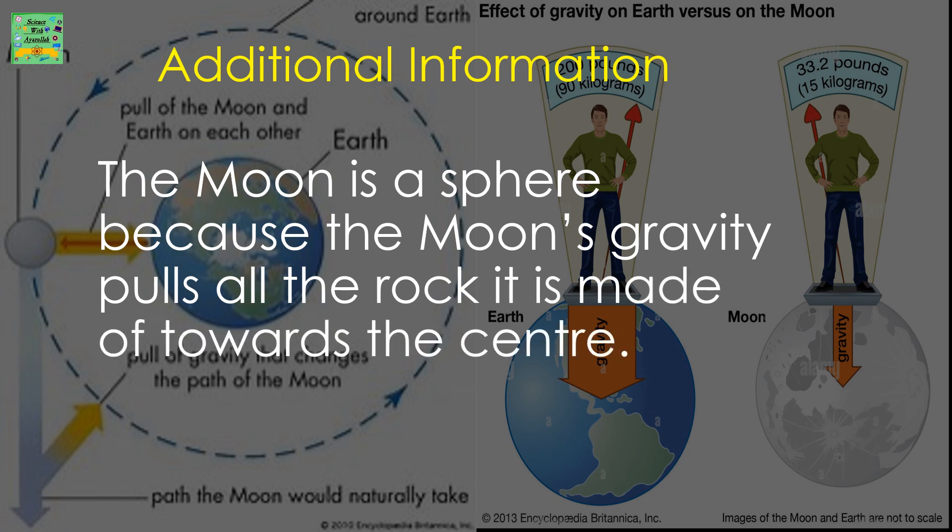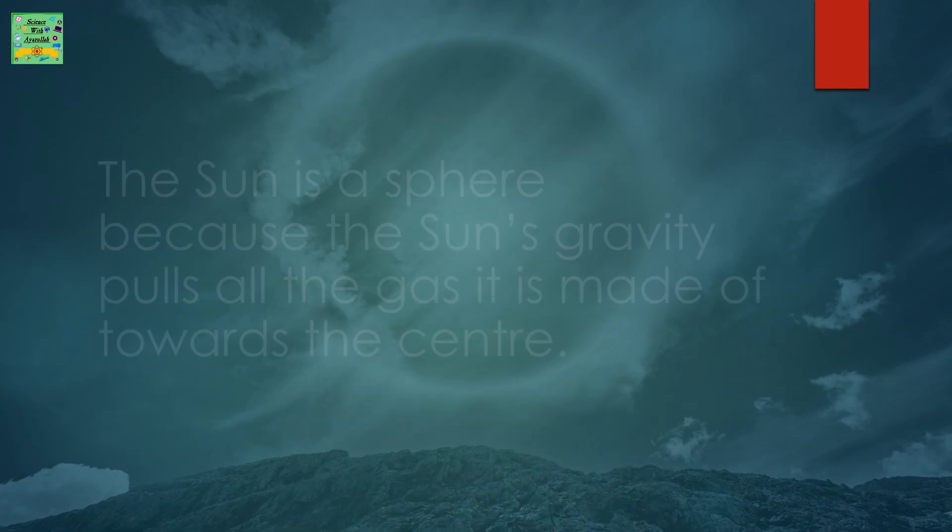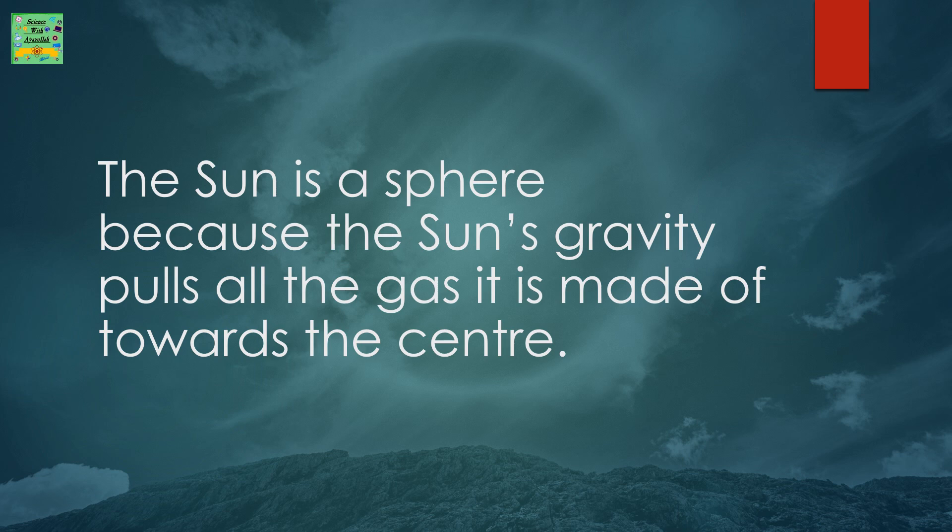The Moon is a sphere because the Moon's gravity pulls all the rock it is made of towards the center. The Sun is a sphere because the Sun's gravity pulls all the gas it is made of towards the center.